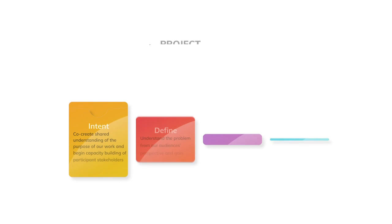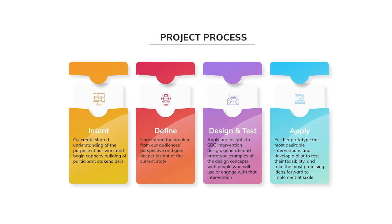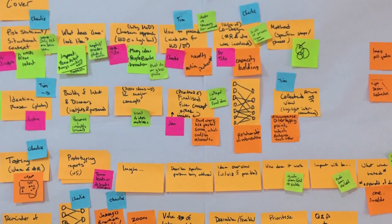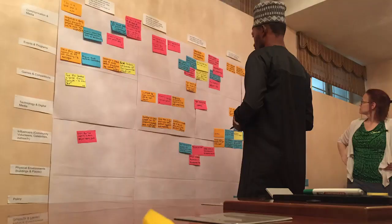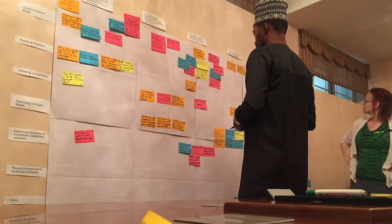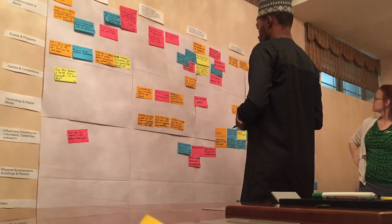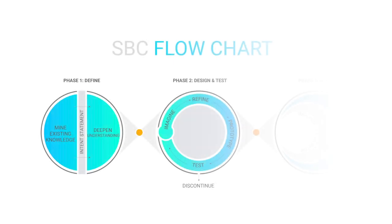Breakthrough Action Nigeria's social and behavioral change flowchart integrates the best thinking in human-centered design, behavioral science, strategic communication, and related fields into a transdisciplinary approach with three phases: Define, Design and Test, and Apply.